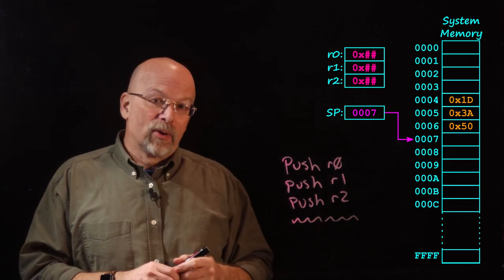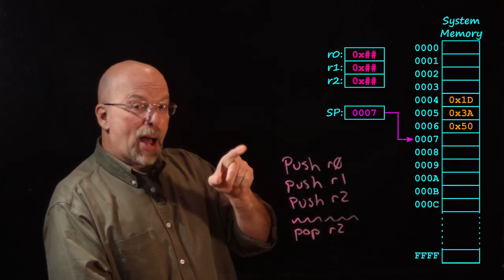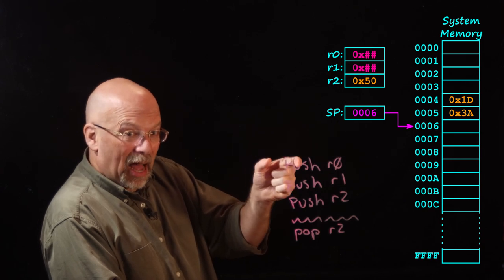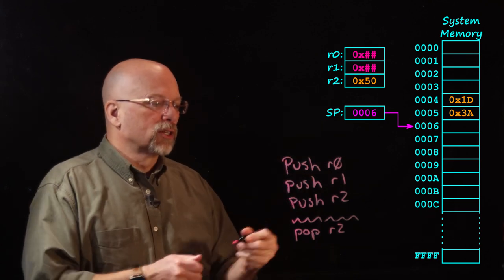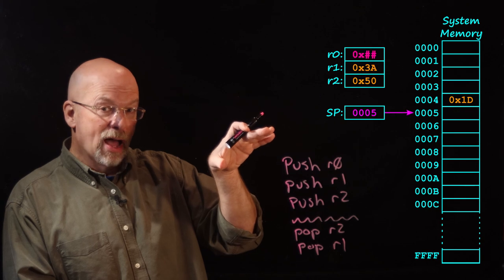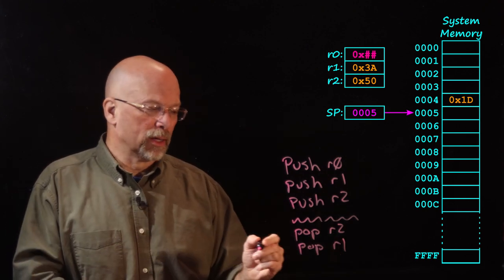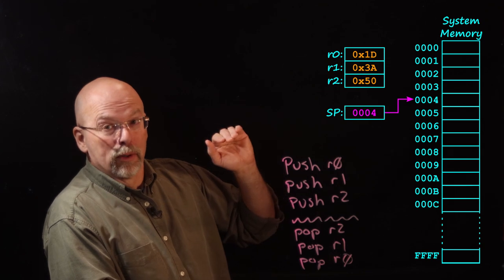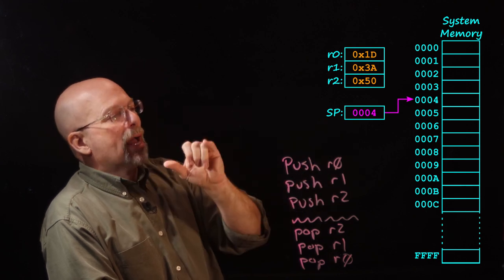What was the last item put on? The last item put on was R2, so we need to pop R2. Popping R2 decrements the stack pointer to six where R2 was stored, takes the value at that memory location, and restores it back to R2. Then we pop R1 — the stack pointer decrements to five, and the value at address five is restored back into R1. Then we do pop R0, decrementing to four — our original stack pointer value — and puts it into R0.